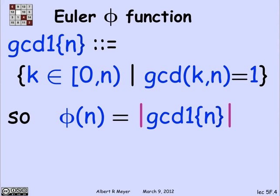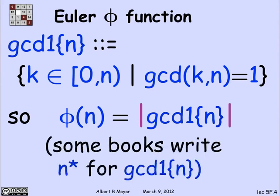Now some authors call GCD1 of n n star. I didn't find that a very informative notation, so I'm not using it. Phi of n is also called Euler's totient function, but we'll just stick to calling it phi or Euler's phi.